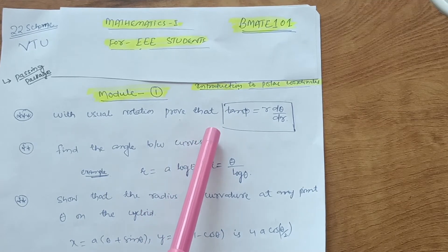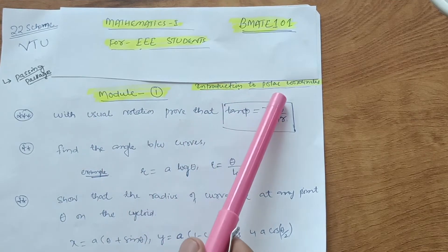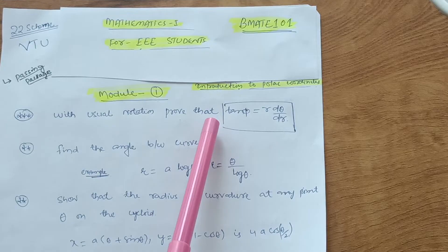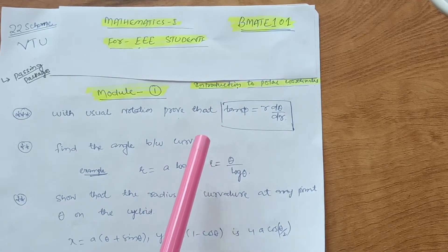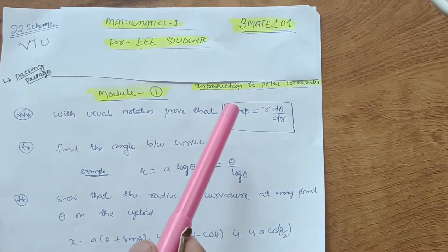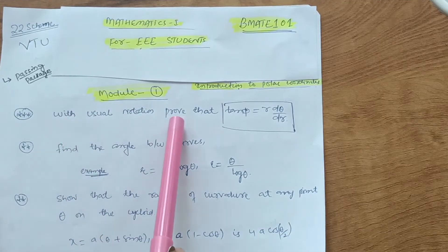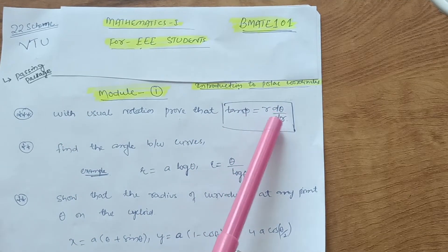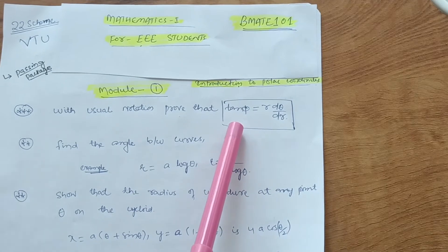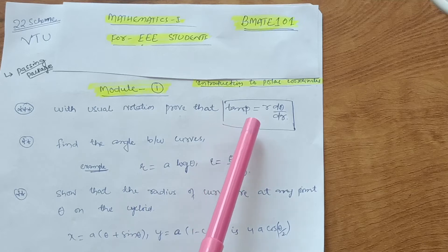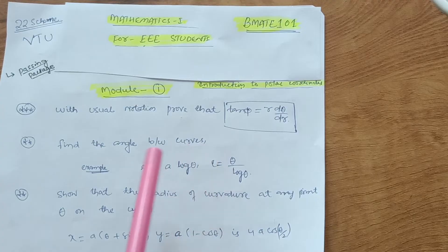In Module 1, the chapter name is Introduction to Polar Coordinates. There are two chapters but you have to focus on only one — otherwise you cannot cover all portions, especially as a backlog student. First of all, with usual notation, prove that tan φ equals r dθ/dr. This is a definite question. There is one more derivation but this is the most important one — just focus on this.